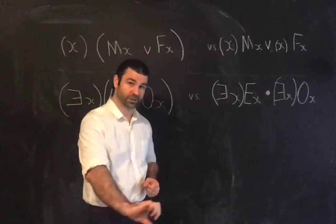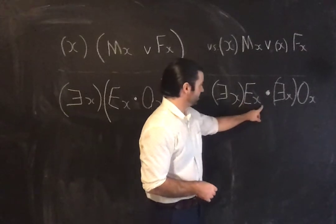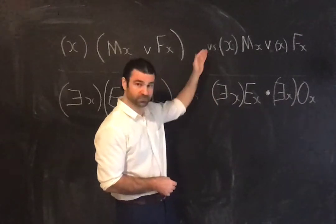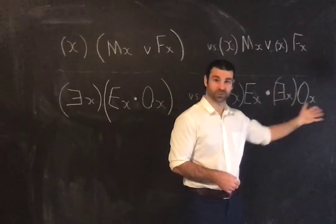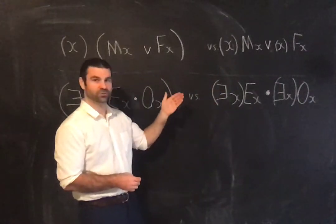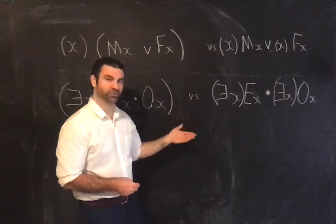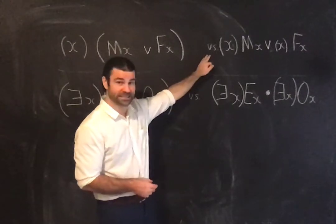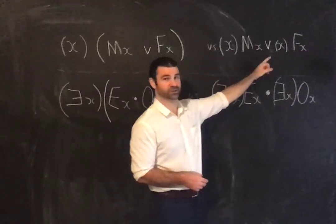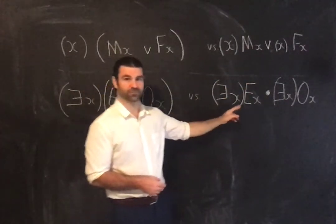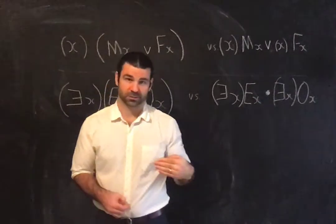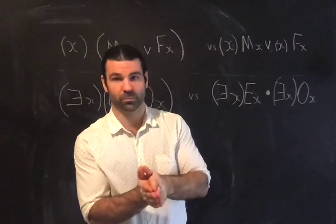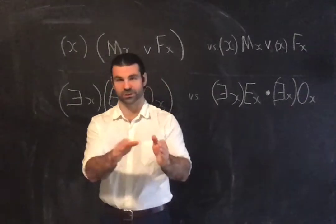The scope of the initial quantifier has to go to the end of the formula. Because the scope of one quantifier just goes to here, and the scope of the other just goes to here — they fail. Both formulas have quantifiers whose scope goes to the end, but it is not true that the scope of the initial quantifier goes to the end. You should recognize that one is not a quantifier formula but a disjunction, and the other is not a quantifier formula but a conjunction.